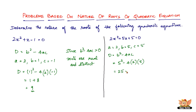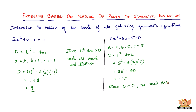So it's 25 minus — 4 times 5 is 20, and 20 times 2 is 40. So 25 minus 40 equals negative 15. Since D is less than 0, the roots are not real.